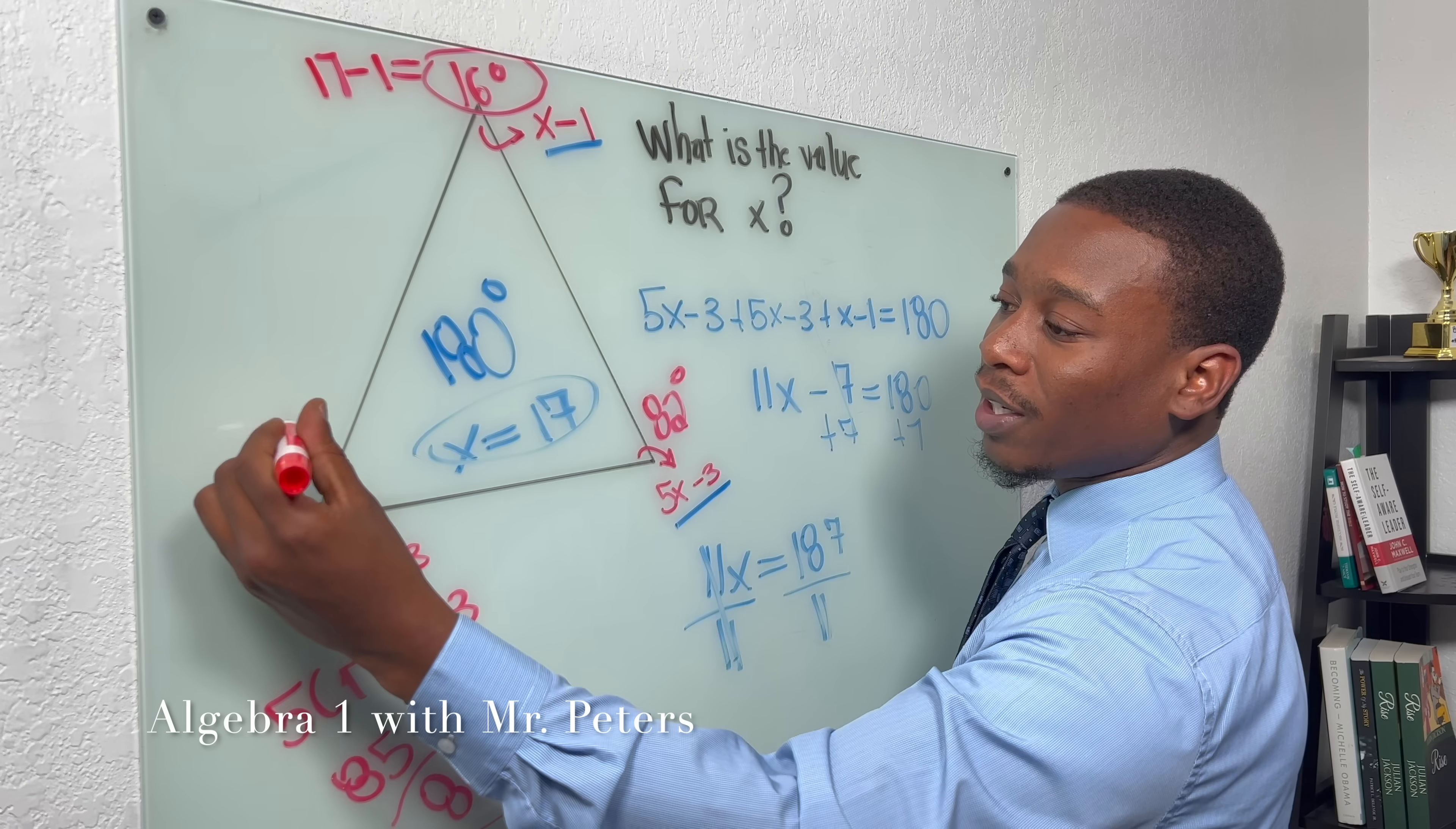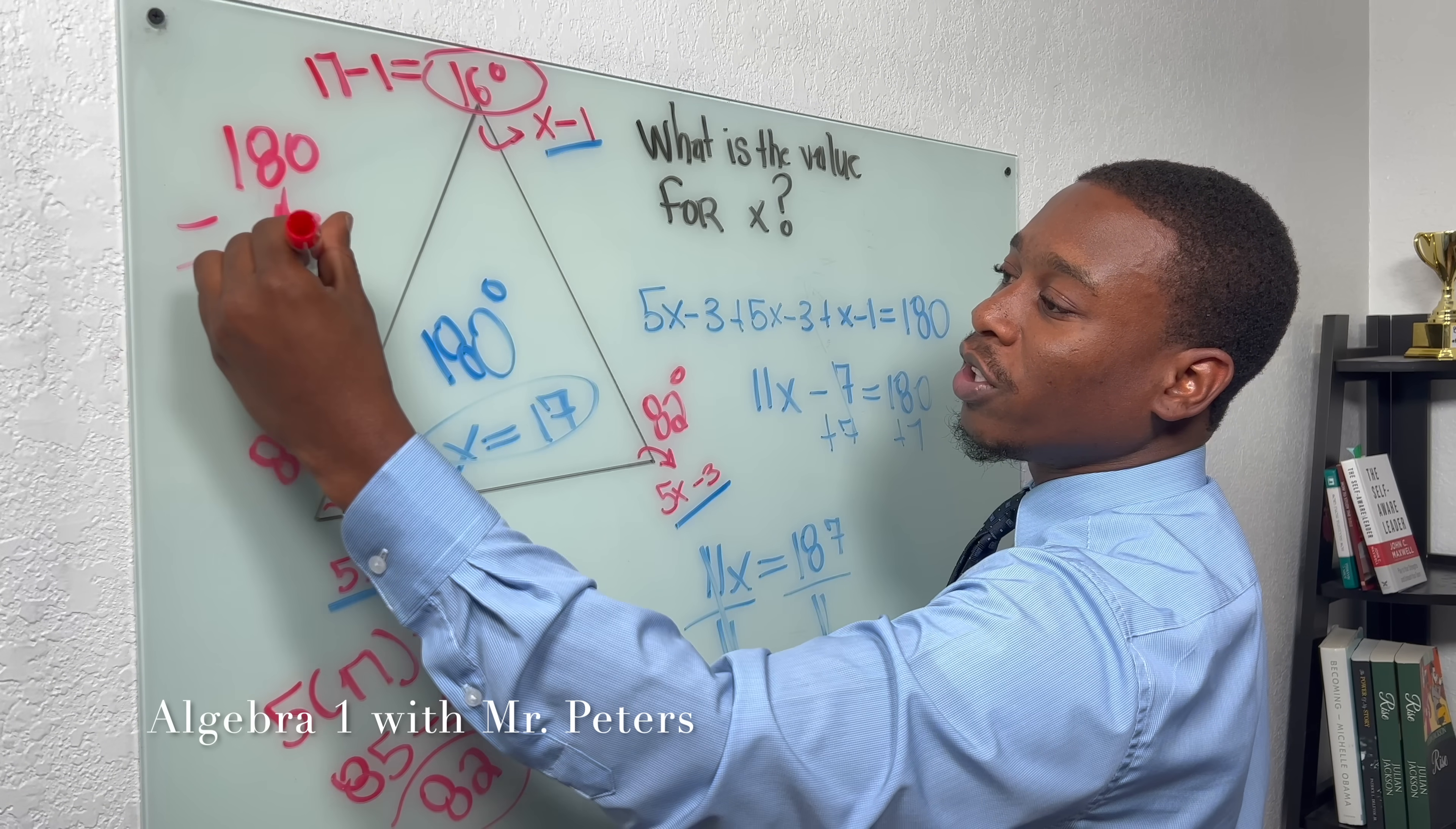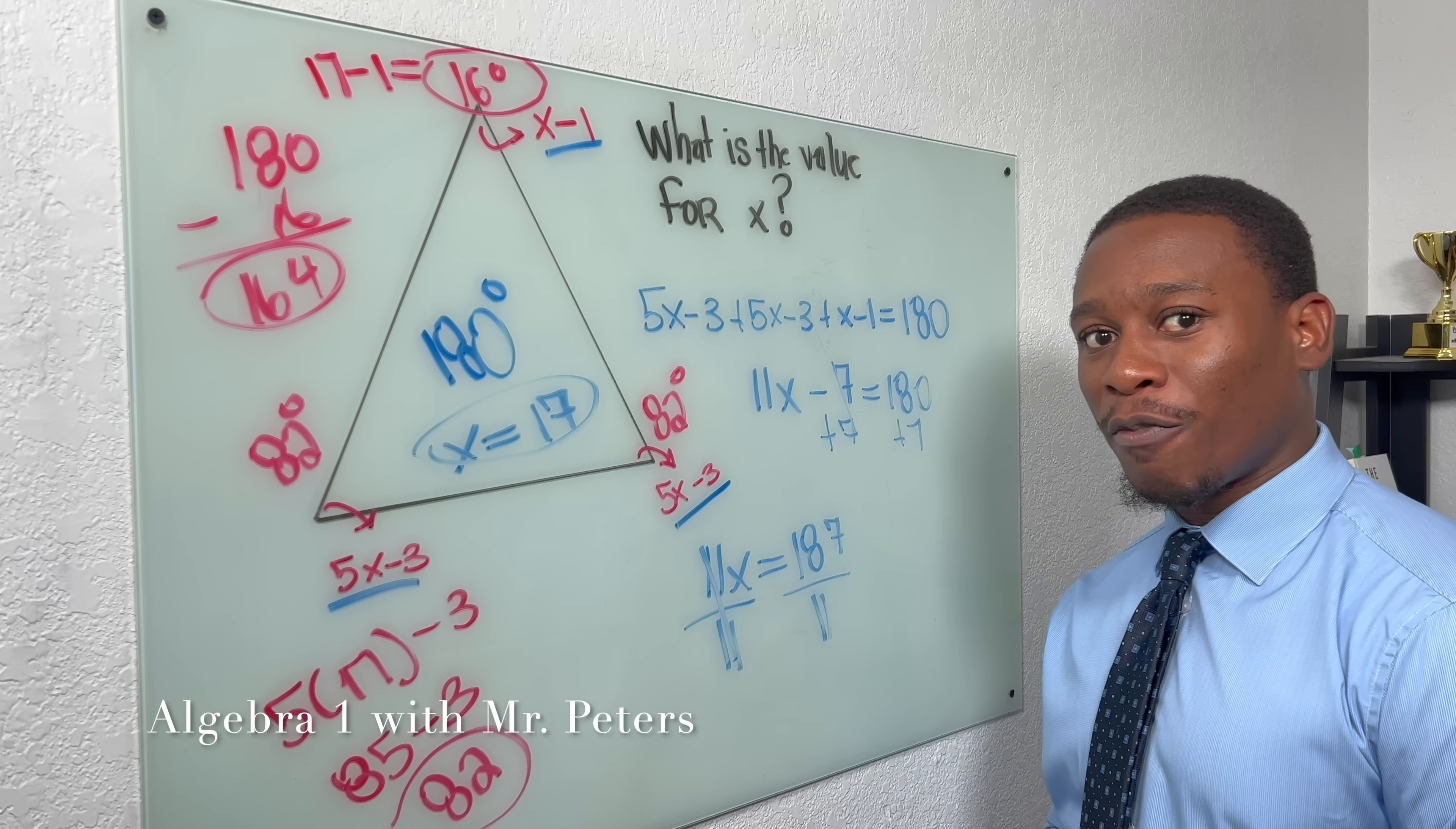But let's just say you didn't take that route. What we could do is just take 180 and subtract 16 from it, right? 180 minus 16. We're going to get 164. And then once we divide 164 by 2, we're going to get 82 degrees for both of those angles. So hopefully this was helpful for you guys.